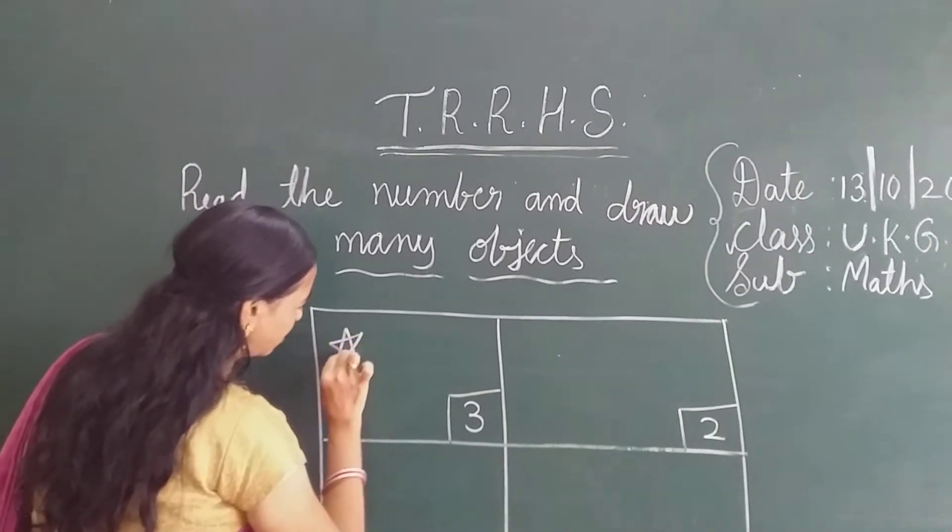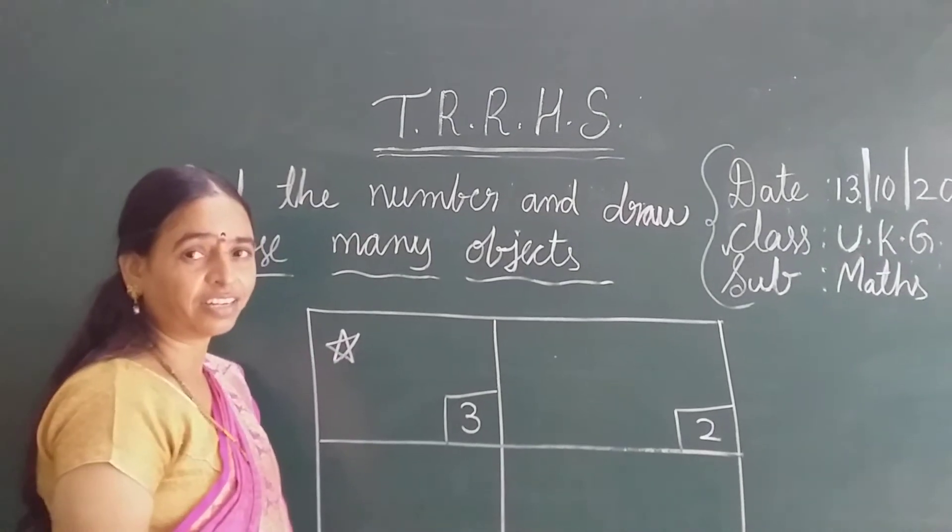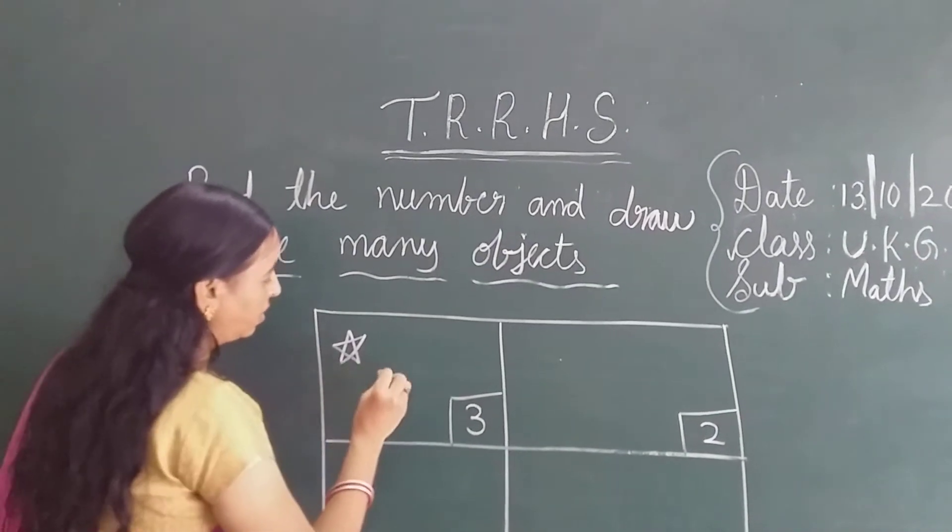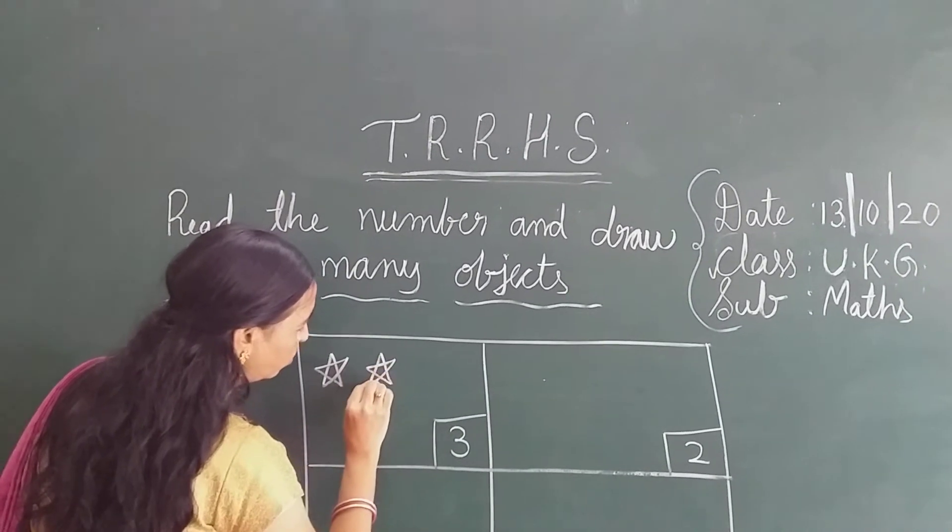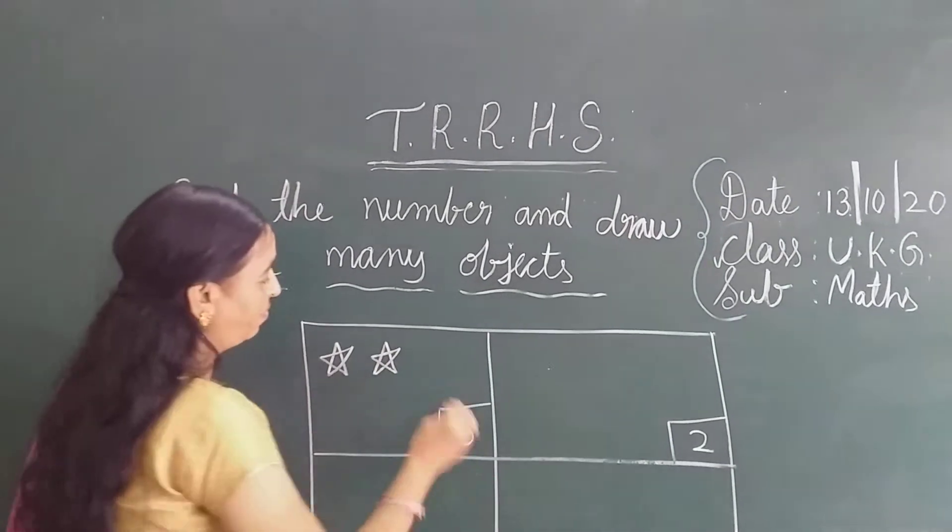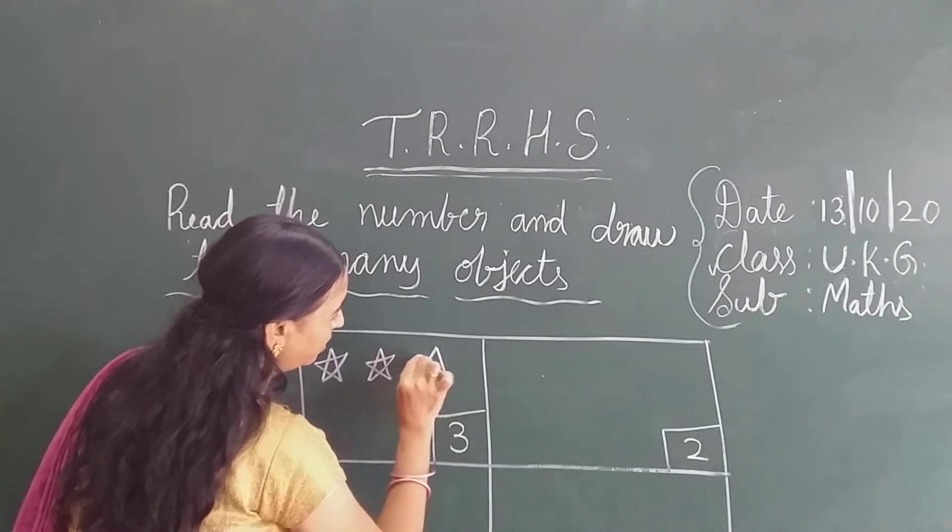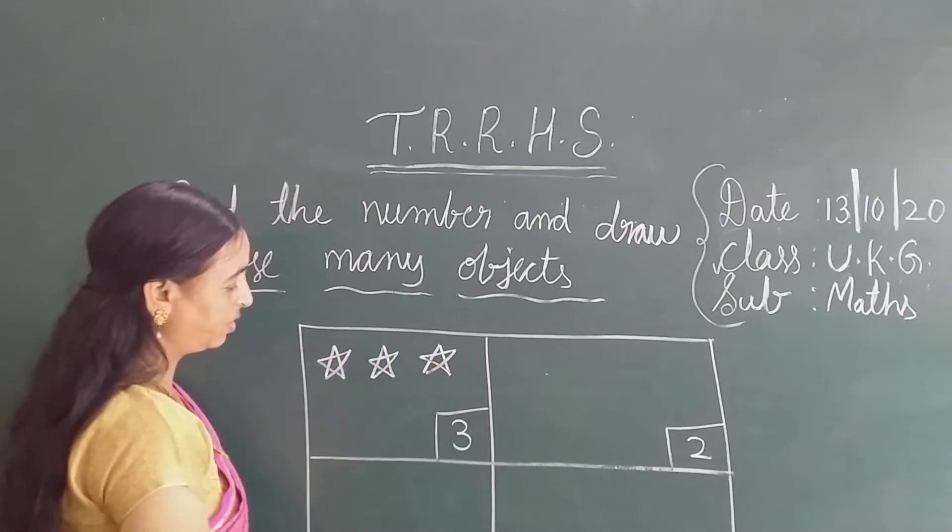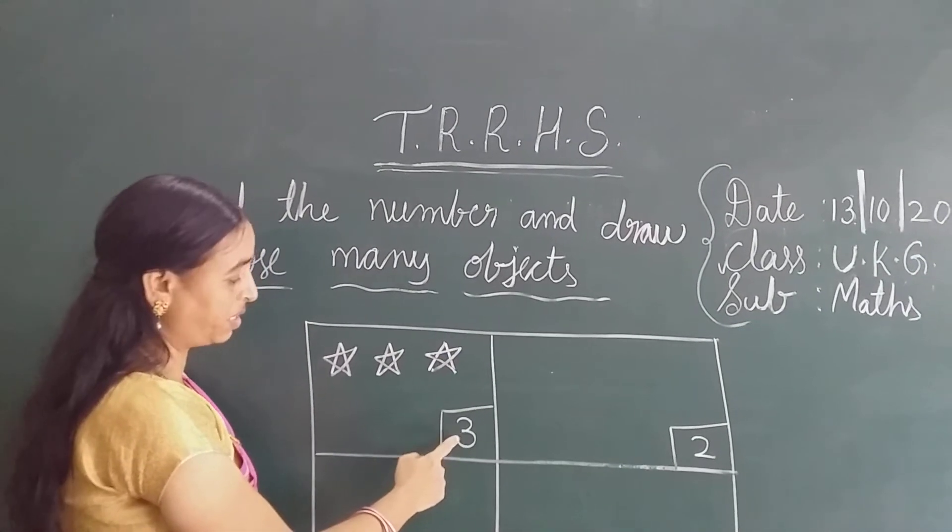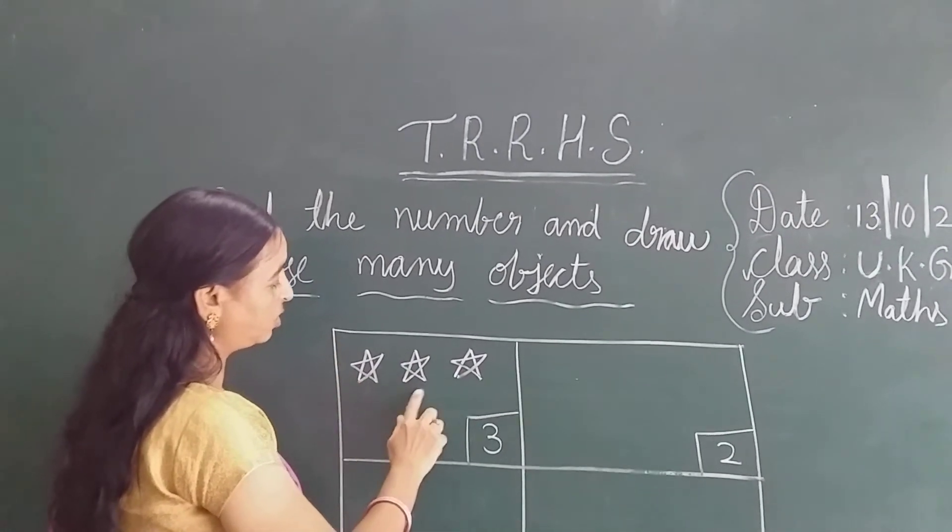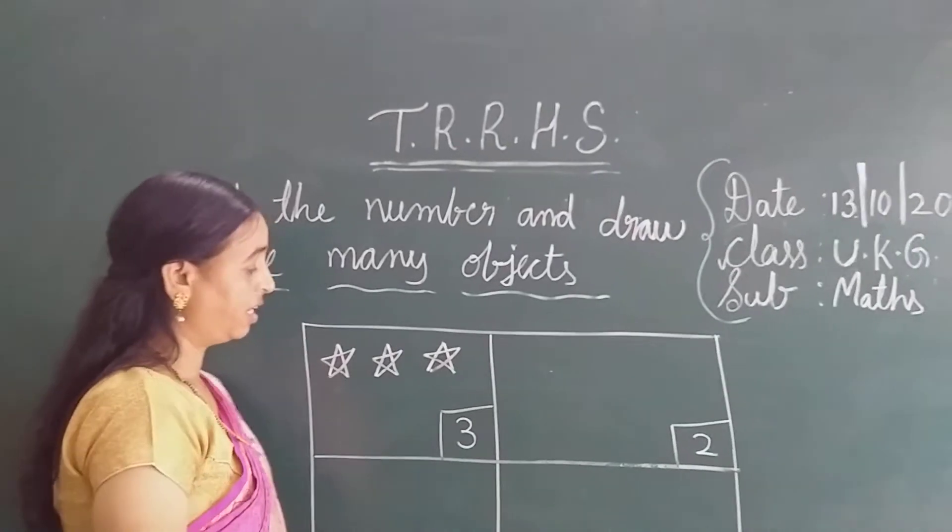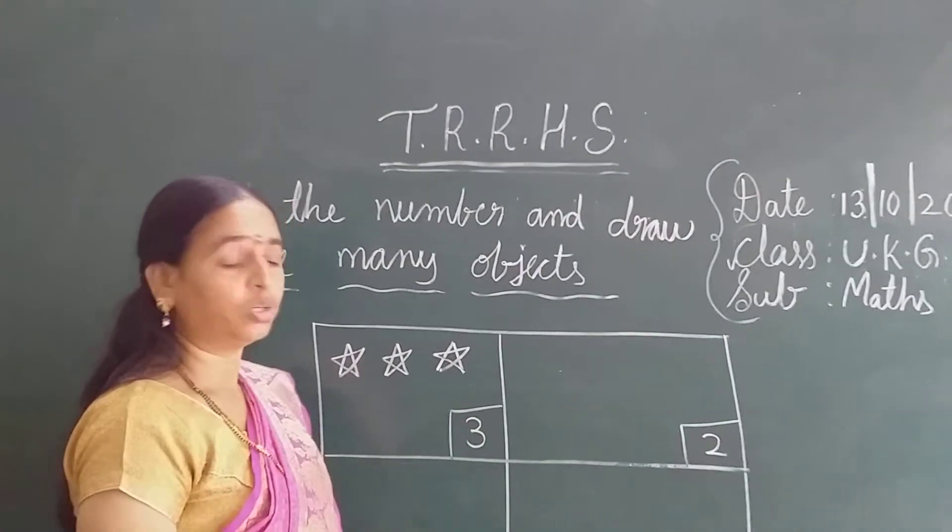What is this? Star. Count 1, 2, 3. What is the number? Number 3. So we have drawn here 1, 2, 3 stars. Like the same we have to do.